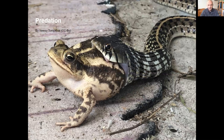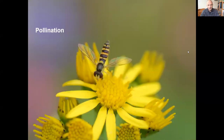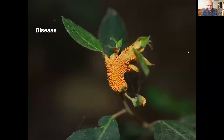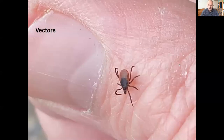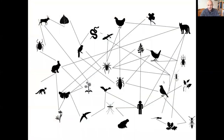They eat each other, they help each other, they cause disease, they carry disease, they live on one another. In fact, every ecosystem is a complex web of different interactions between organisms, and it's very difficult to model or understand how an introduction of any one new species might impact other species within that ecosystem.